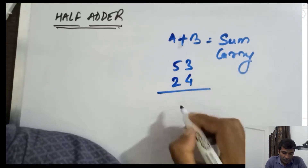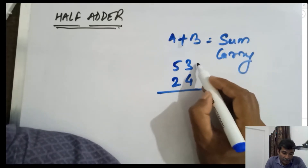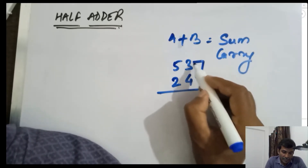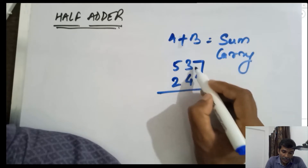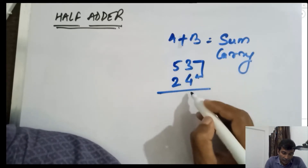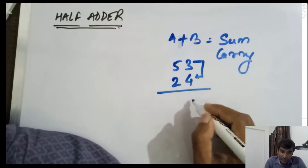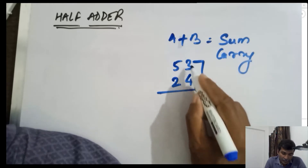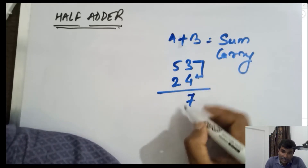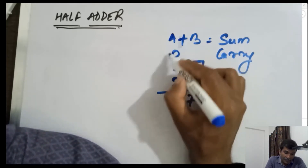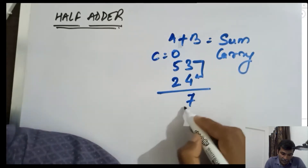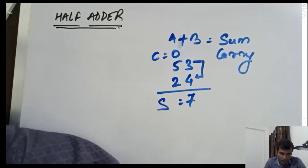It adds two bits. Suppose you are adding a decimal number, say 53 and 24. While adding, you just add two bits — that is 3 and 4. What is the sum generated while adding?